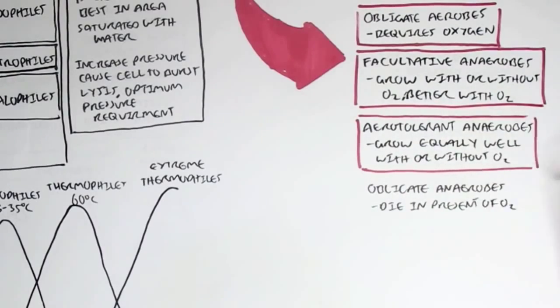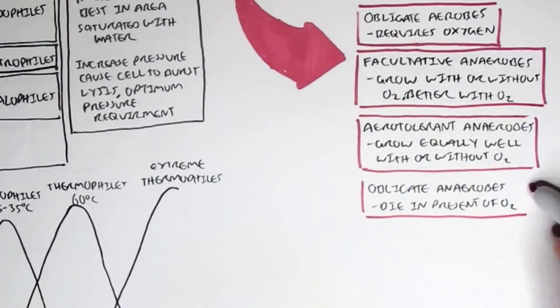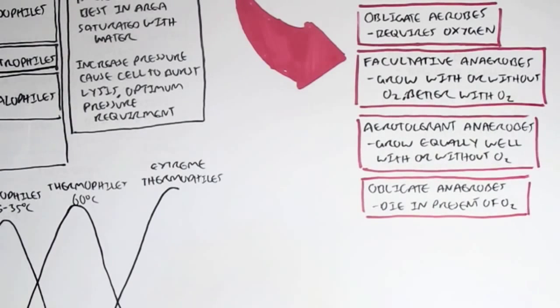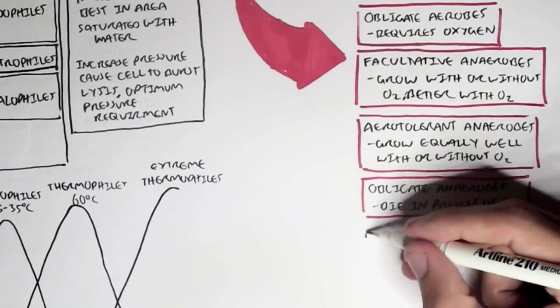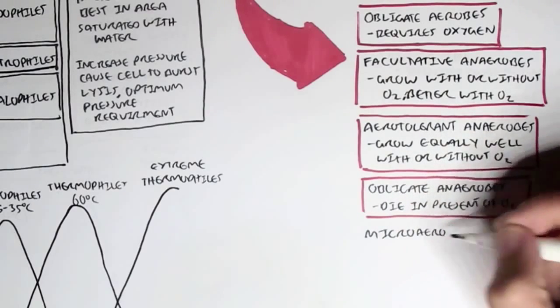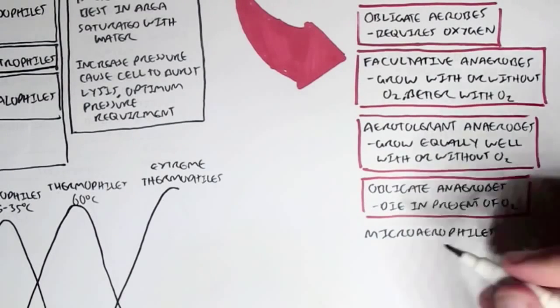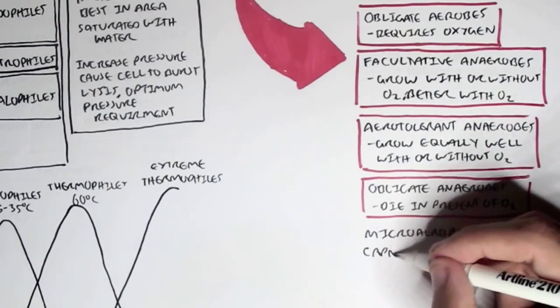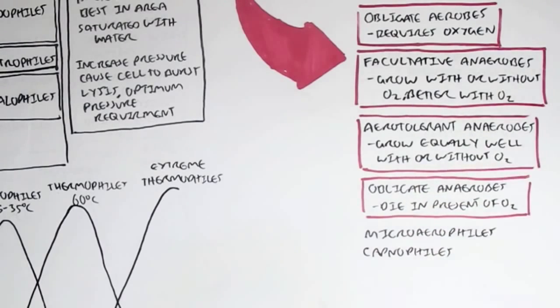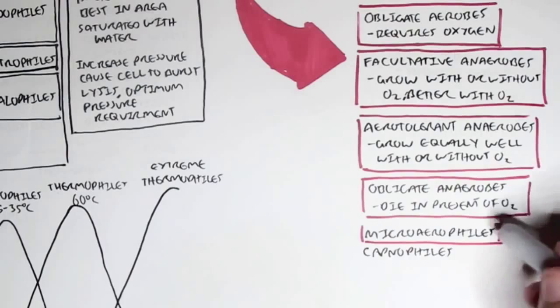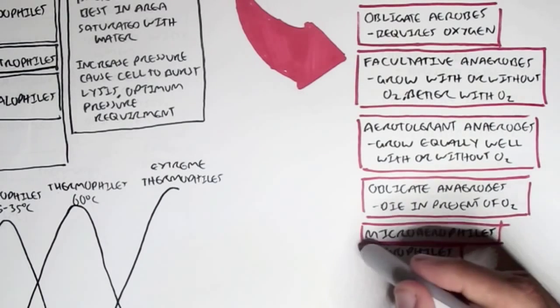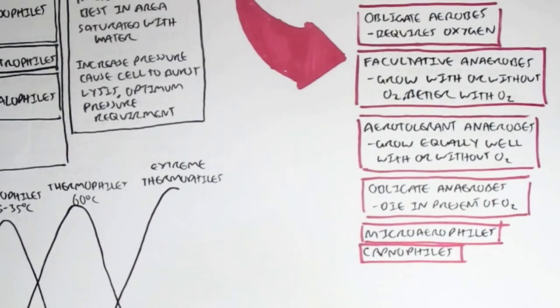Obligate anaerobes are bacteria cells which die in the presence of oxygen. And then we have these special cases of bacteria, such as microaerophils, which are bacteria cells which won't grow at normal atmospheric oxygen levels, which is 20%. So for example, they won't grow in the room you are sitting in now. But these bacteria require only some oxygen for growth, between 2 and 10%. Then we have capnophils, which are bacteria which require carbon dioxide. They are carbon dioxide loving.